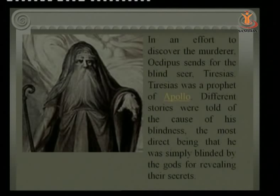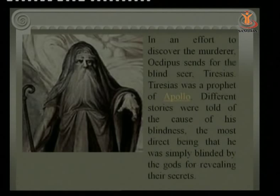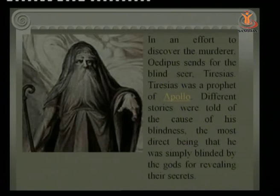Yet another story about Tiresias says he watched and stabbed snakes that were mating, and for that he received a curse — he had to be a woman for seven years, then would become a man again. There are many stories regarding Tiresias, but in Sophocles' Oedipus Rex, he is taken as the prophet of Apollo who can foretell the future.